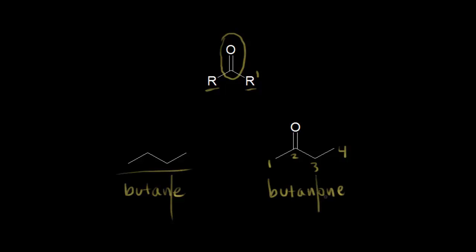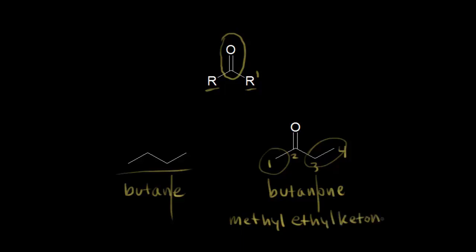There's an old way of naming ketones, which is to think about the two alkyl groups. There's a methyl group on this side and an ethyl group on the other side — so methyl ethyl ketone gives you the structure for this molecule too. Normally you would put the E before the M alphabetically, but for this one it doesn't really matter. Everyone knows what methyl ethyl ketone is, also abbreviated MEK. Naming the alkyl groups is an old way of naming ketones, which you will sometimes still see.